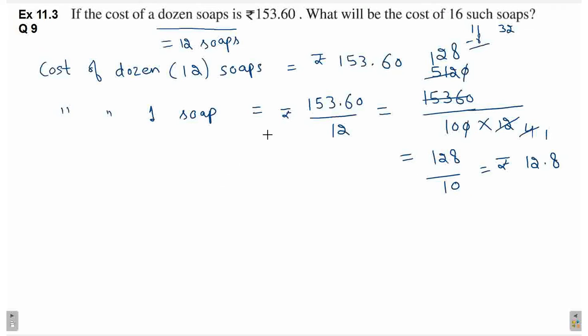Itni cost aa gayi 1 soap ki. Ab hum nikaal lete hain cost of 16 soaps. Cost of 16 soaps is equal to cost of 1 soap which is rupees 12.8 multiply kar do 16 ke saat.